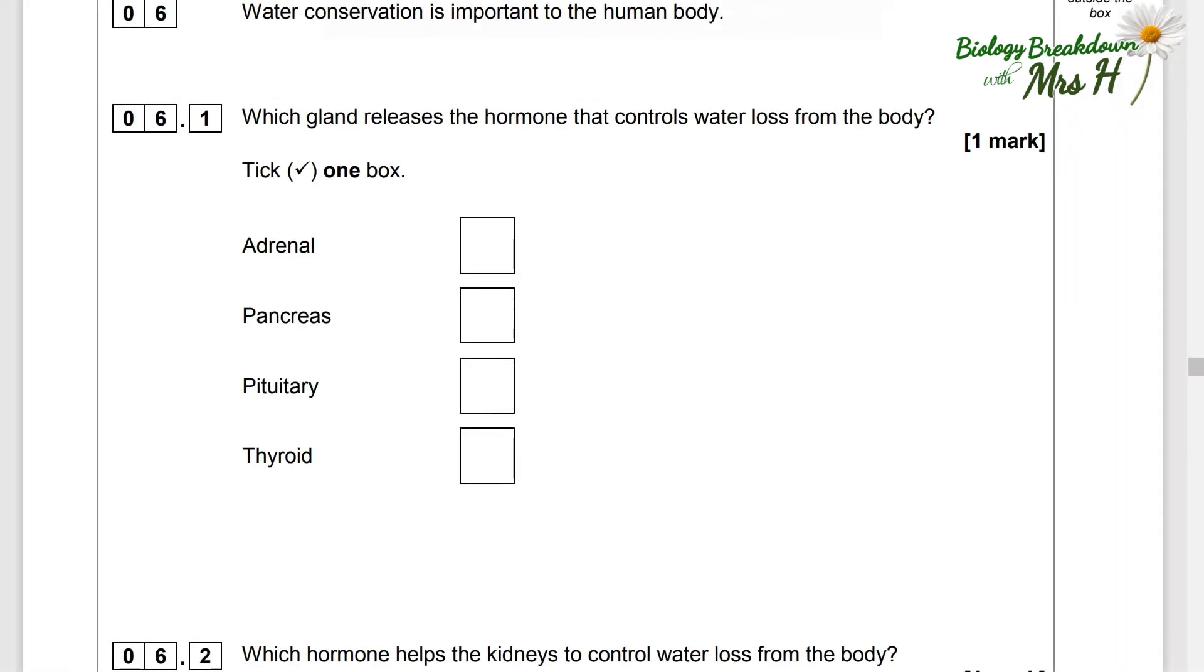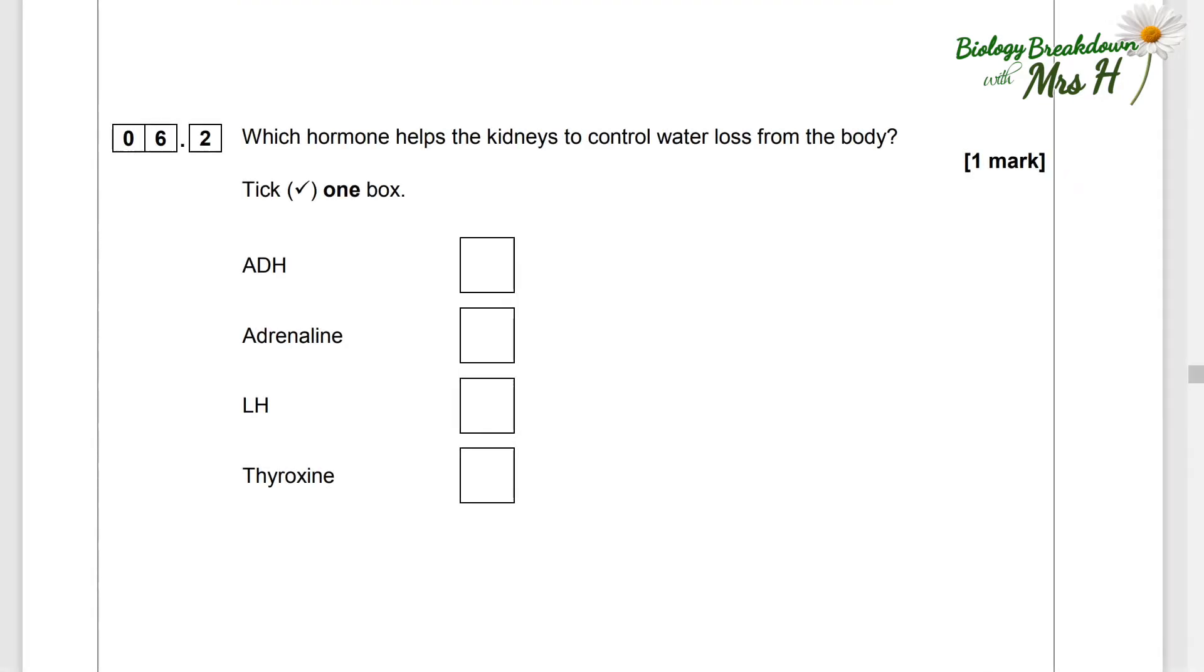Water conservation is important to the human body so we don't want to lose too much water. Which gland releases the hormone that controls water loss from the body? Adrenal, pancreas, pituitary. Which hormone helps the kidneys to control water loss from the body? And that is ADH. We don't have to look any further than that.